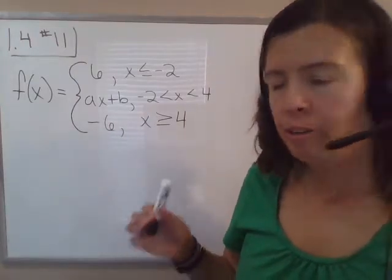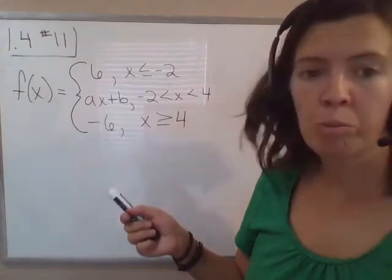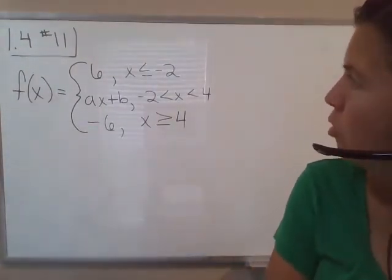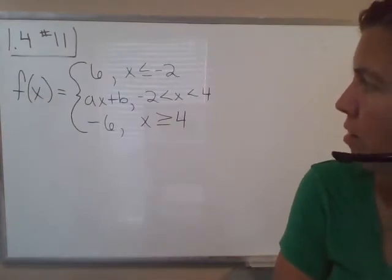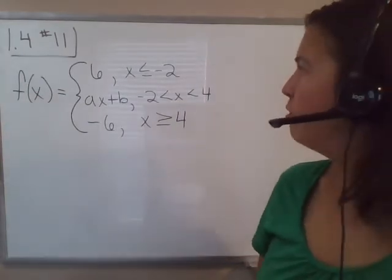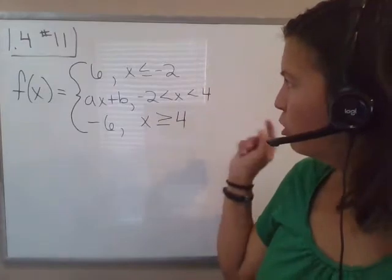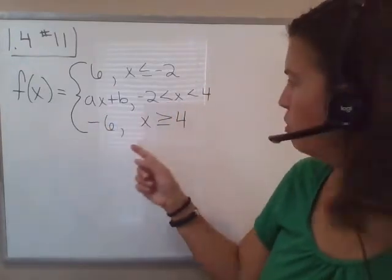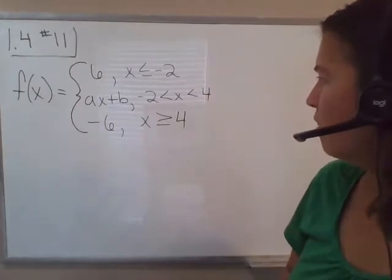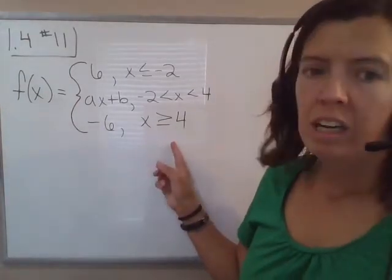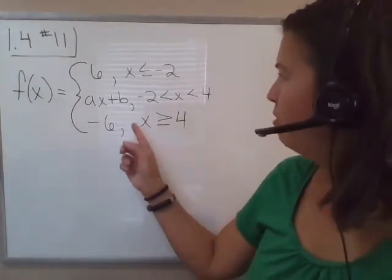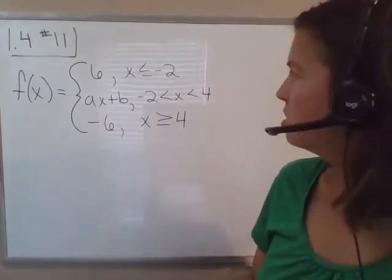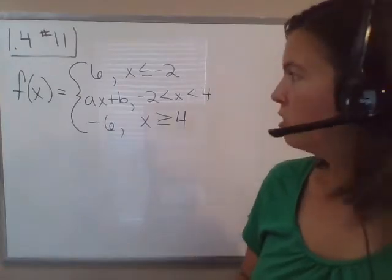I want to create a video to offer some help with 1.4 number 11 that was requested. This is the version that was emailed to me. f of x equals 6 when x is less than or equal to negative 2, ax plus b if x is between negative 2 and 4, and then negative 6 if x is greater than or equal to 4. The task is to find values of a and b so that this function is continuous at all values of x.